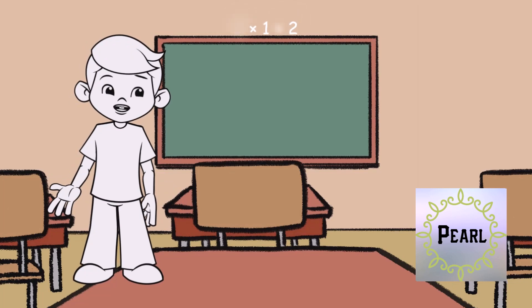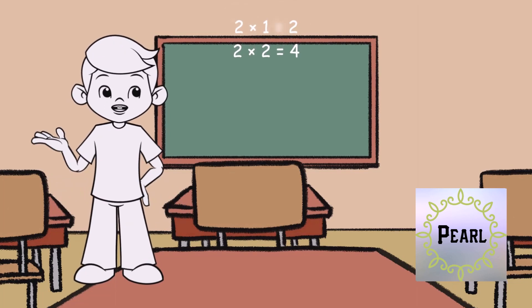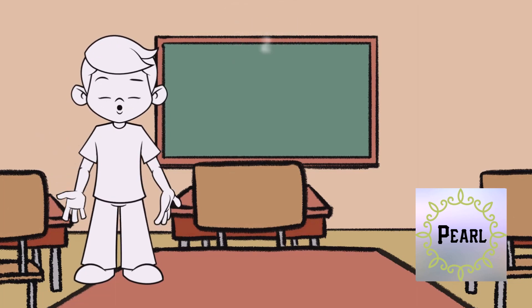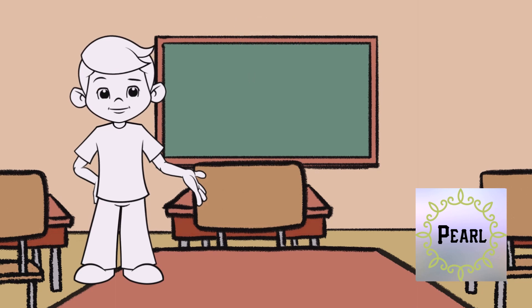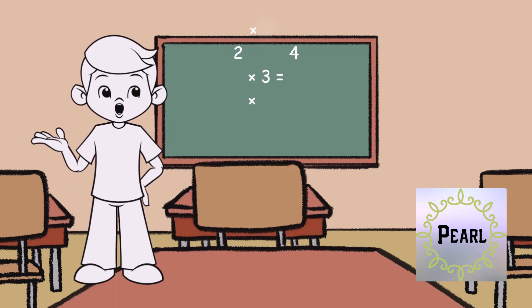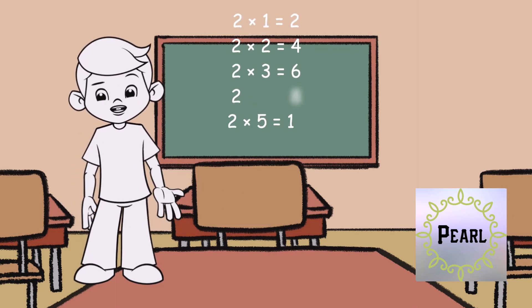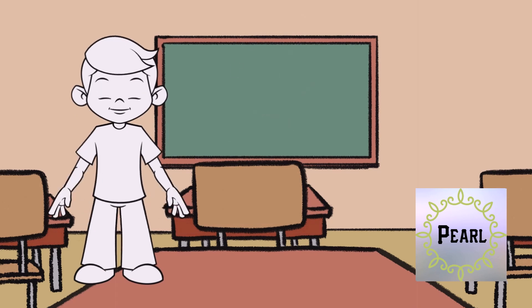2 x 1 is equal to 2. 2 x 2 is equal to 4. 2 x 3 is equal to 6. 2 x 4 is equal to 8. 2 x 5 is equal to 10.